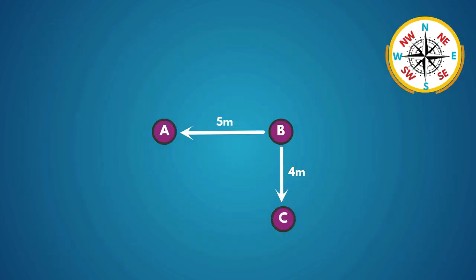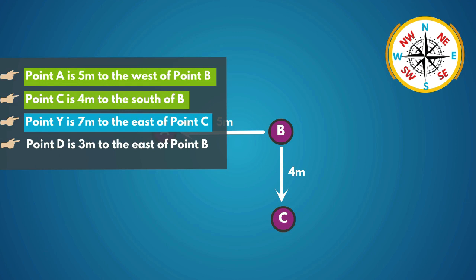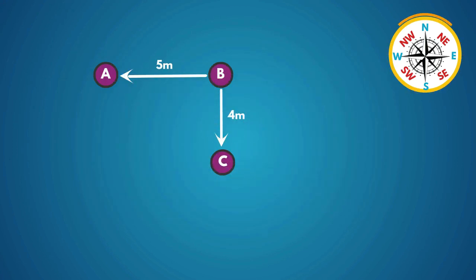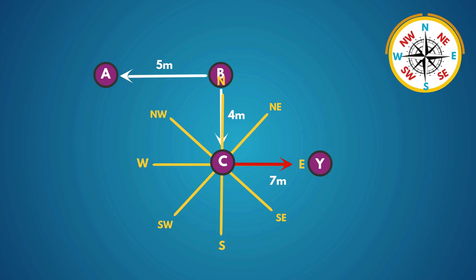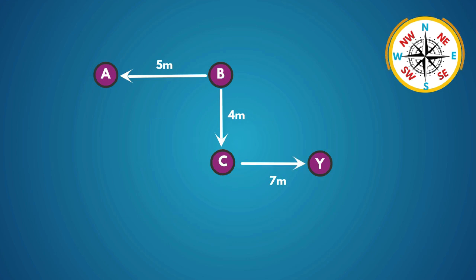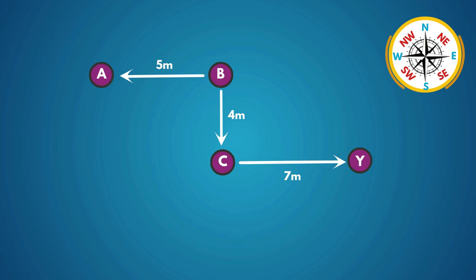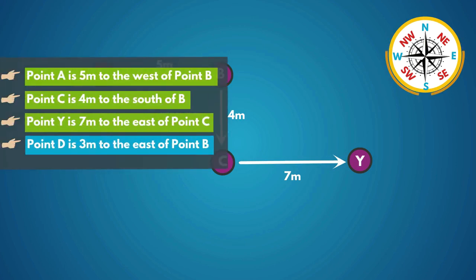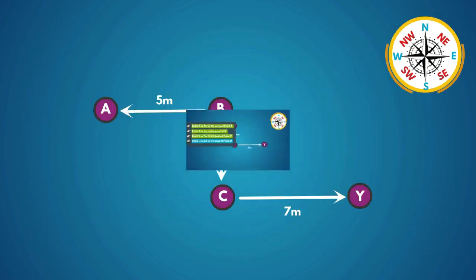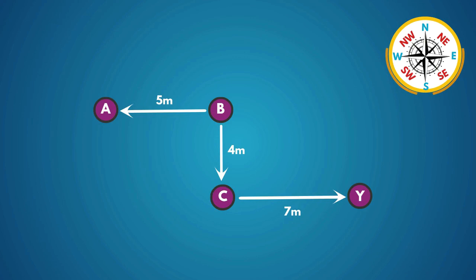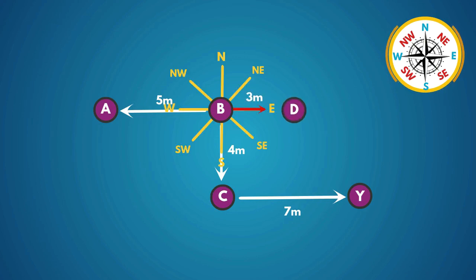In the next statement they given that point C is 4 meters to the south of B. In the next statement they given that point Y is 7 meters to the east of point C. Here, this is point C, and point Y is 7 meters to the east of point C. In the next statement they given that point D is 3 meters to the east of point B. Here, this is point B, and point D is 3 meters to the east of point B.